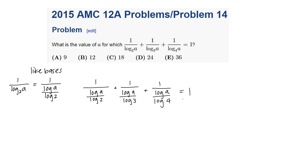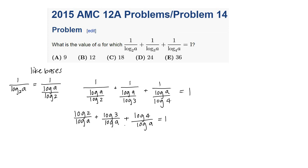Now, when we divide by a fraction we multiply by the reciprocal. So the reciprocal of each term gives us log 2 over log a, plus log 3 over log a, plus log 4 over log a, all equal to 1. This looks daunting, but remember — when adding fractions with the same denominator, we don't add the denominators. So we get log 2 plus log 3 plus log 4, all over log a.